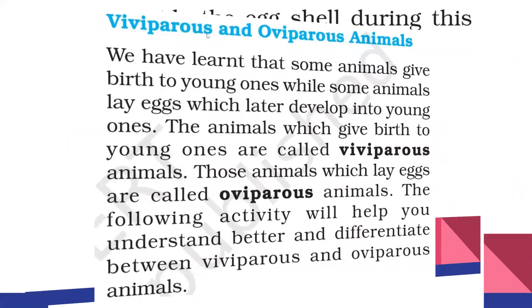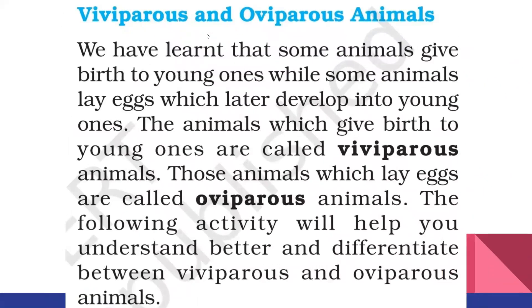Now we are going to learn about viviparous animals and oviparous animals. Some animals give birth to young ones, while some animals lay eggs which later develop into young ones. The animals which give birth to young ones are called viviparous animals. Those animals which lay eggs are called oviparous animals.